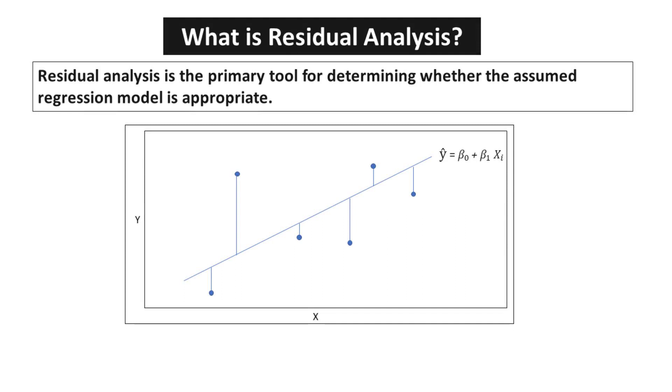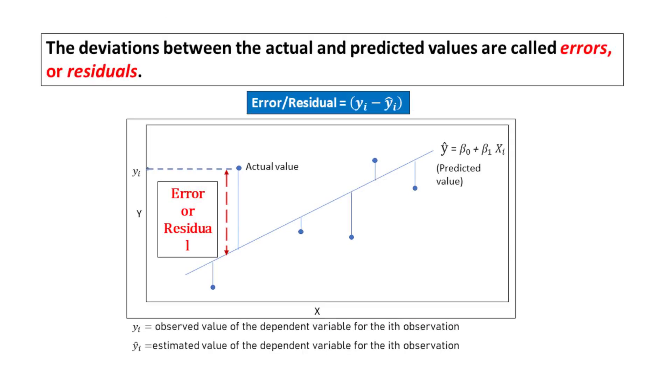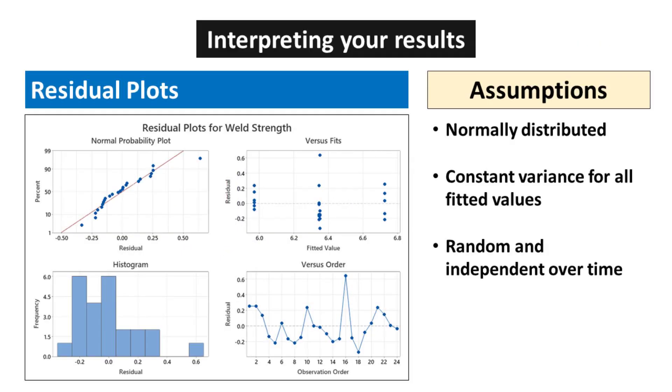Residual analysis is the primary tool for determining whether the assumed regression model is appropriate. The deviations between the actual and predicted values are called errors or residuals. You should examine residual plots and other diagnostic statistics to determine whether your model is adequate and the assumptions of regression are met. If your model is not adequate, it will incorrectly represent your data. There are three assumptions of error: normally distributed, constant variance for all fitted values, and random and independent over time.